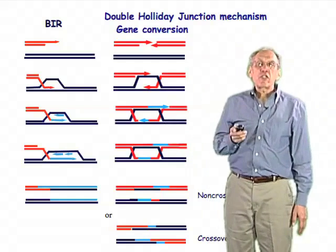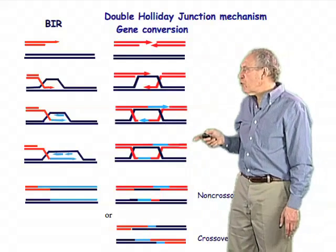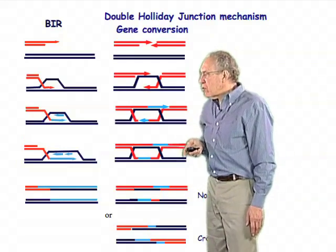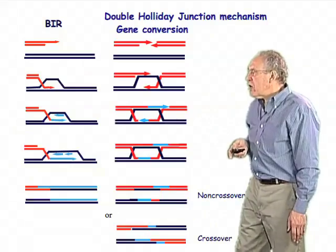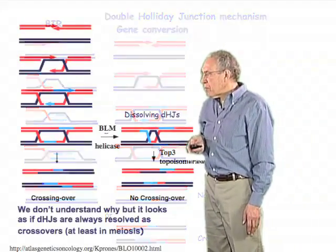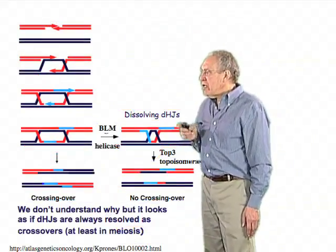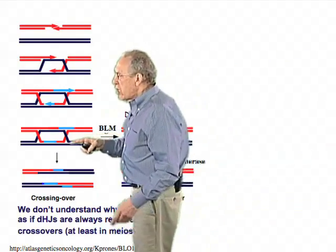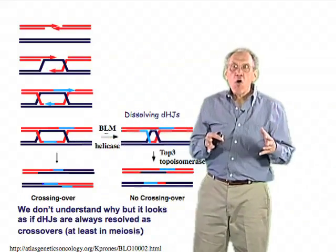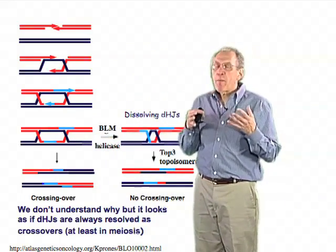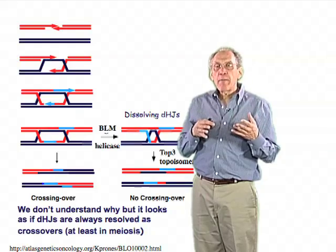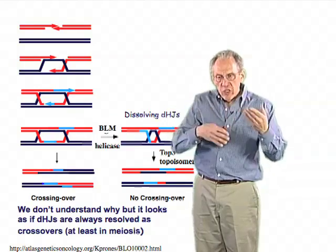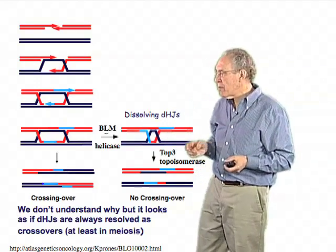The double Holliday junction, which is shown here, has its own remarkable properties. One of them, illustrated on the next slide, is that this double Holliday junction can actually be dissolved. This is a property that cannot happen with a single Holliday junction because it has no way to exchange strands in the way being described.